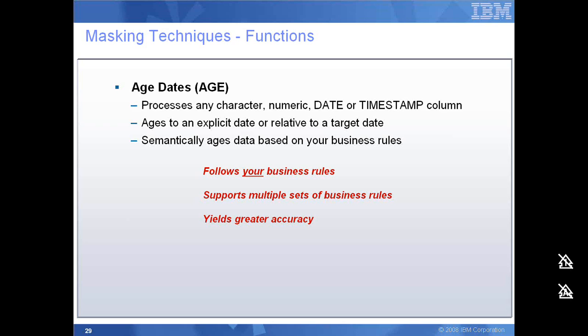Optim also has support for aging functions, specifically in data columns which have date values — it can be date of birth, date of joining, or other date columns. I can use an aging function to ensure that the data is not the same as in the production data. I can age it by a specific number of days, months, or years. When enforcing an aging function, I have to understand the business requirement and ensure that it supports multiple sets of business rules, which yields greater accuracy.